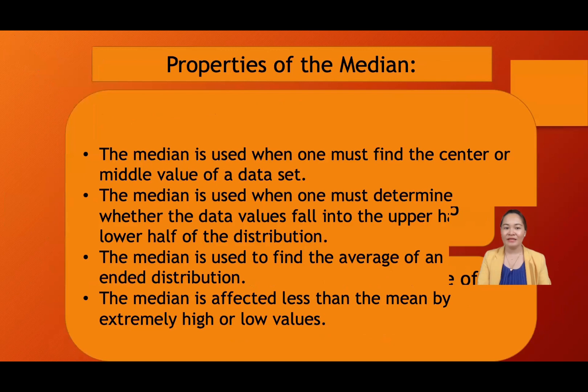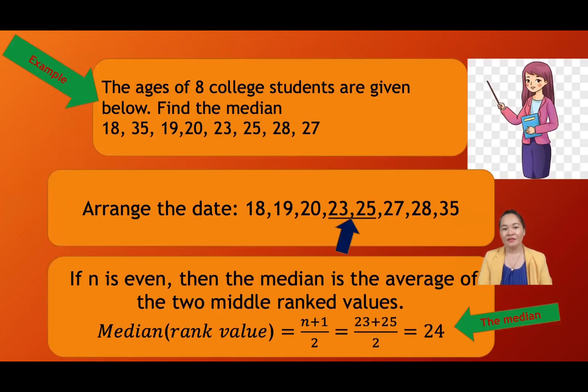So we have an example. The ages of eight college students are given. Find the median. 18, 35, 19, 20, 23, 25, 28, 27. First arrange the data in order.